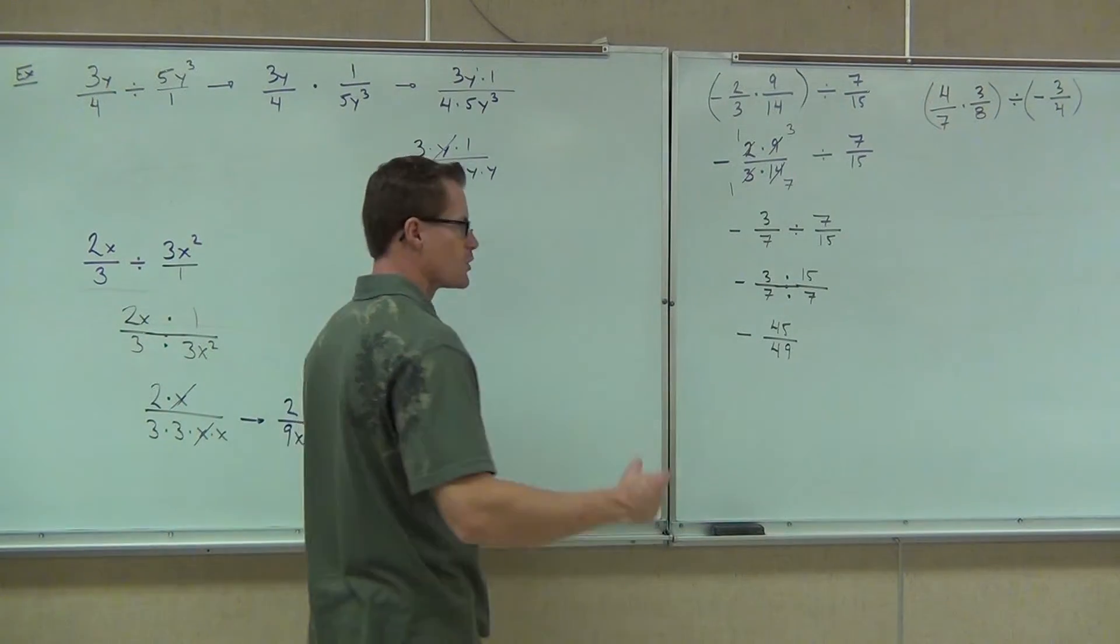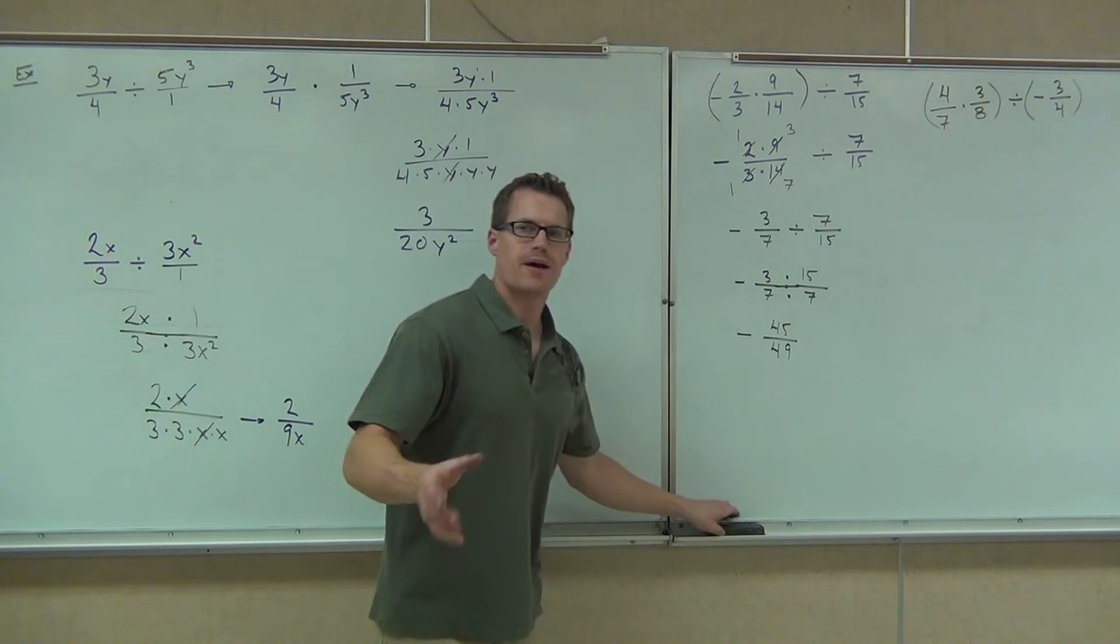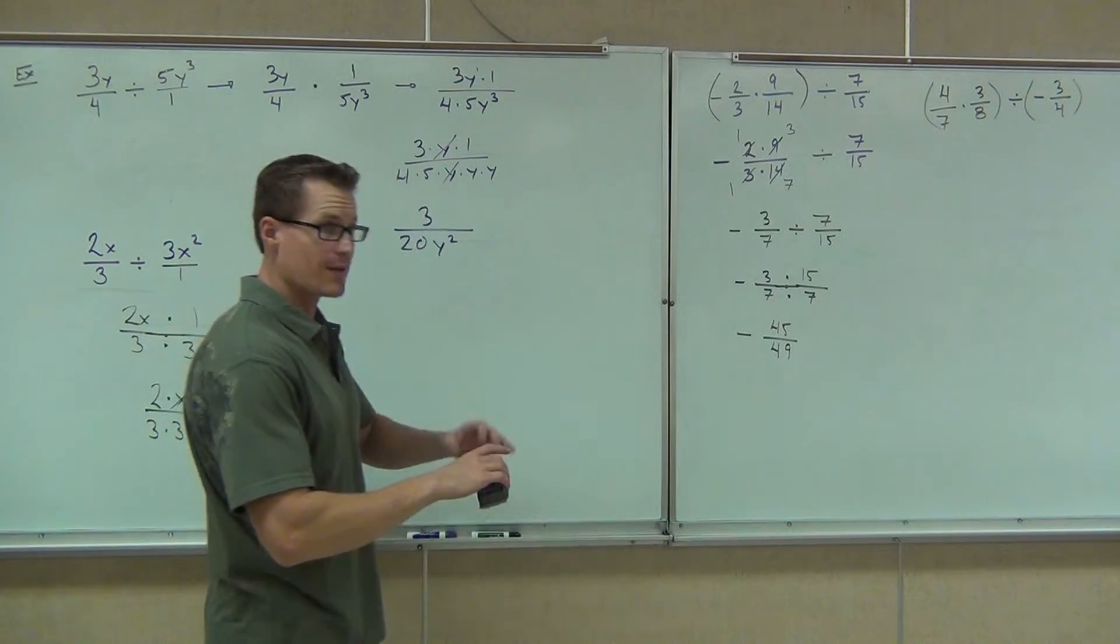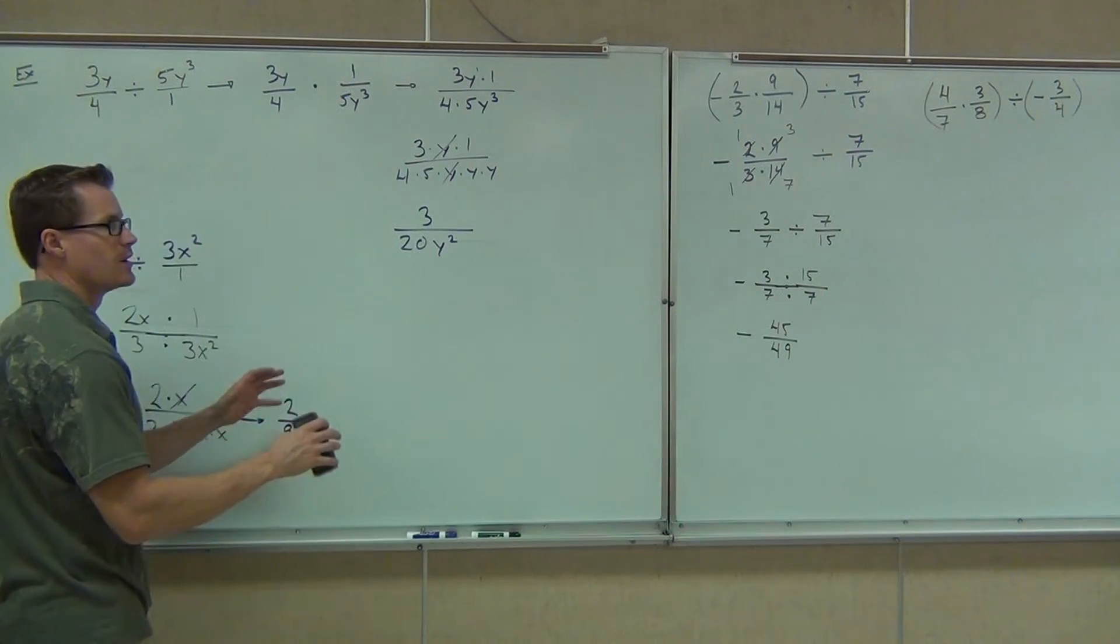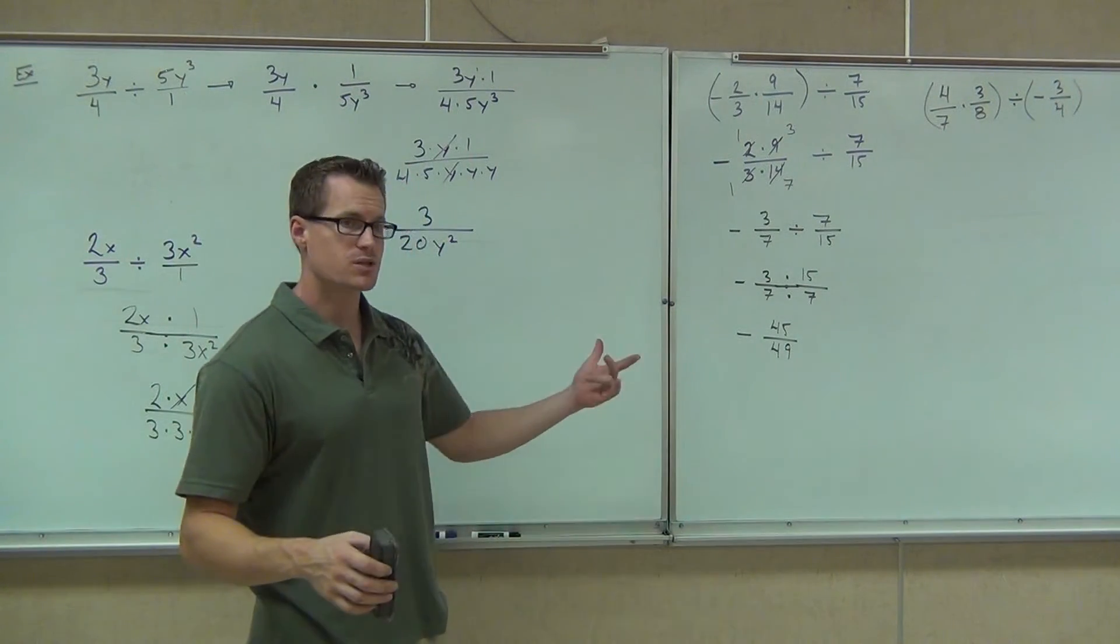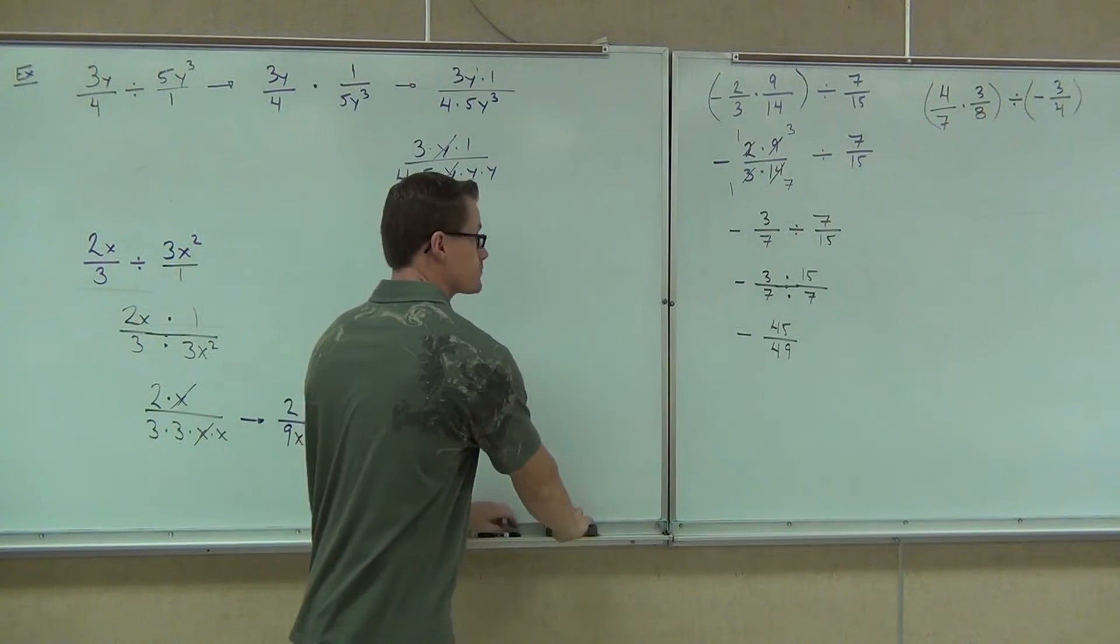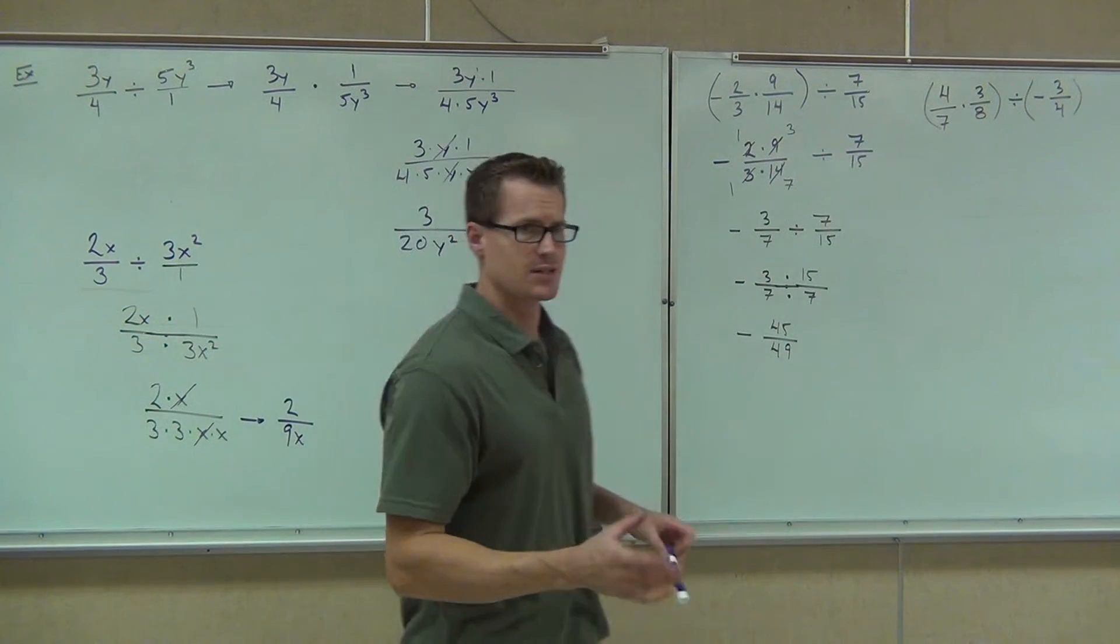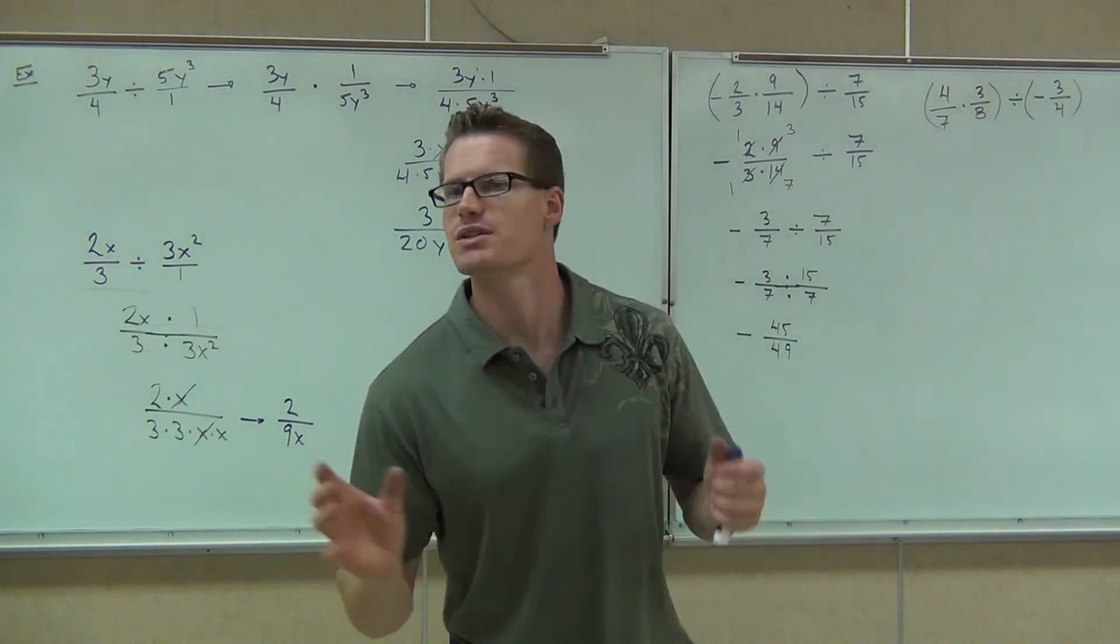Okay, so kind of an order of operations problem and a fraction problem all tied together. And we're going to have some of those later in this chapter as well. We put a lot of stuff, addition, subtraction, multiplication, division, exponents, all together in these problems. So this is kind of a nice stepping stone for us. Now, the first thing that it says to do is look for any parentheses, do what's inside of them. Now, this parentheses just says I have a negative fraction, but this one says I can do something in there.